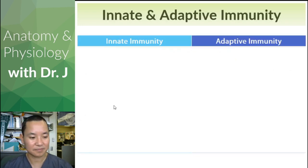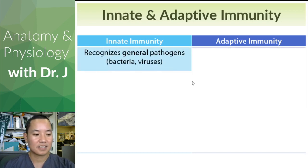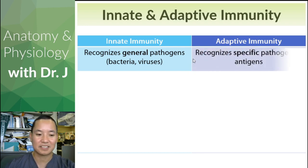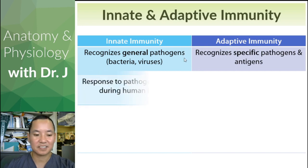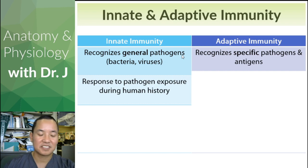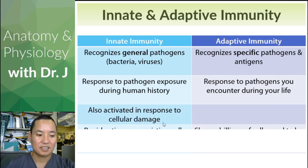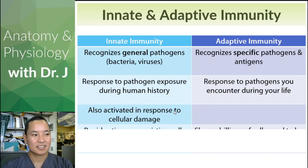To compare and contrast: innate immunity recognizes general common chemical patterns you find in things like bacteria, viruses, and parasites. Whereas adaptive immunity is more specific. Innate immune responses come from human history and evolution, while adaptive immunity covers the things you encounter during your life.